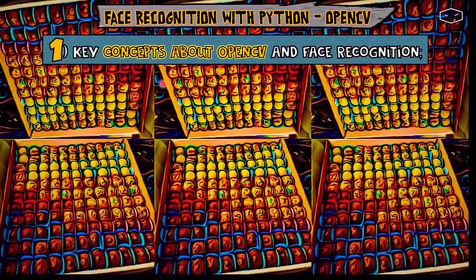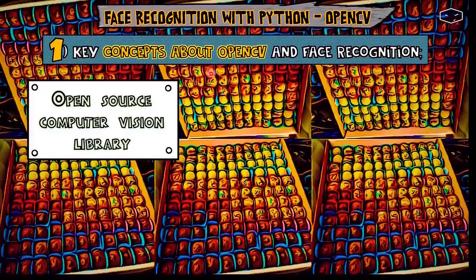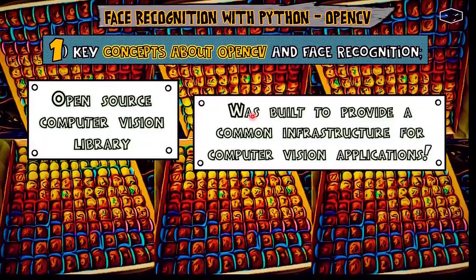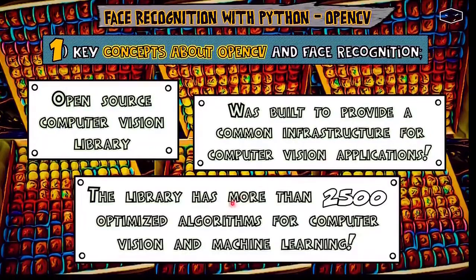And now the boring part — concepts about OpenCV. It means Open Source Computer Vision Library, and it was built to provide a common infrastructure for computer vision applications. It has a lot of optimized algorithms for computer vision and machine learning.